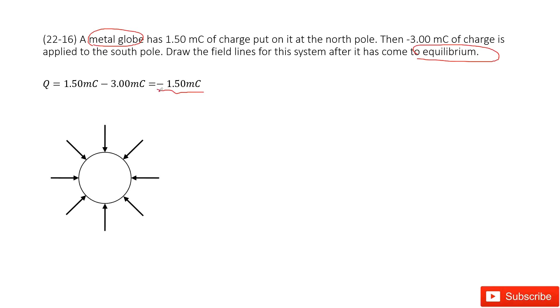This is a net negative charge. For negative charge, we can consider this metal globe as a negative point charge. So the electric field lines will radially inward. Do you agree? Inward.